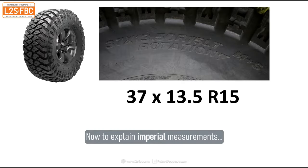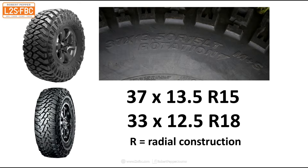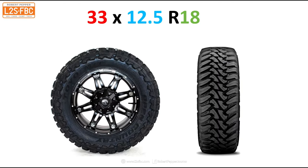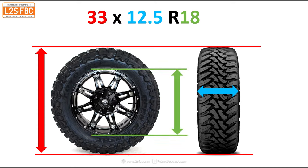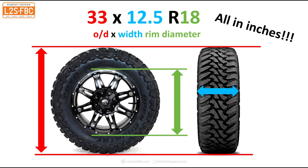Now here's the second, older way to describe a tyre's measurements. Examples: 37×13.5×R15, or 33×12.5×R18. The R stands for radial construction, but that's not important for the measurements. Taking the 33×12.5×R18: the 33 refers to the overall diameter of the tyre in inches, 12.5 refers to the width of the tread in inches, and 18 is the diameter of the rim in inches. Happily, they're all in inches, so it's much easier than mixing different measurement units.